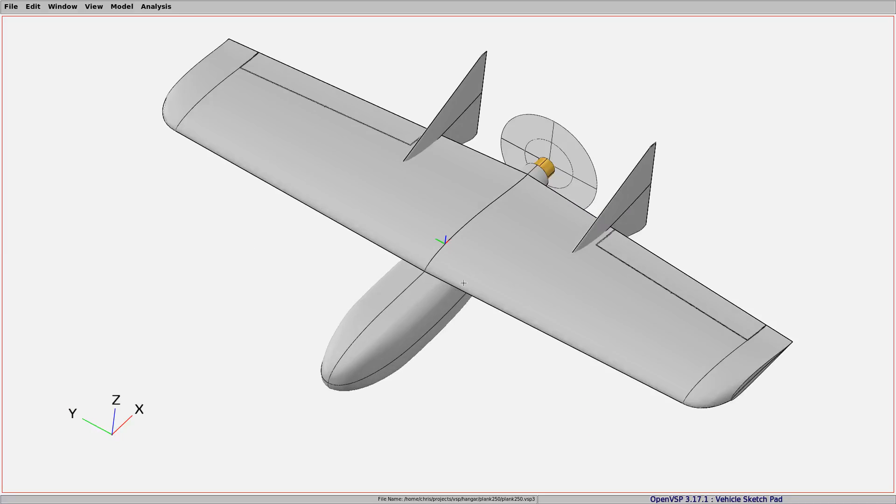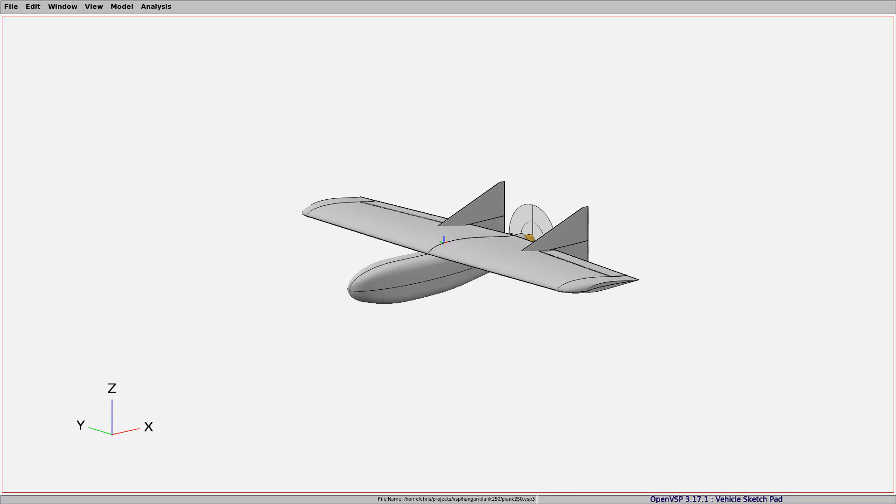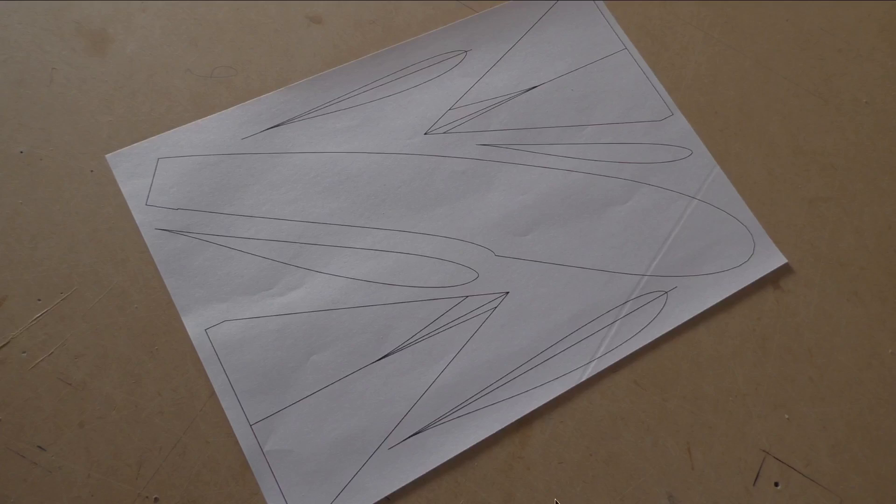Anyway, I haven't flown it yet, but it's ready to fly, so I'll just show you some photos. Here are the templates printed onto paper. I was able to fit all of it onto one sheet of A4 paper, which is pretty nice. The airfoils are MH64, 11% for both the root and the tip, and I stuck those onto plywood and cut them out with my scroll saw as I've done in the past many times.